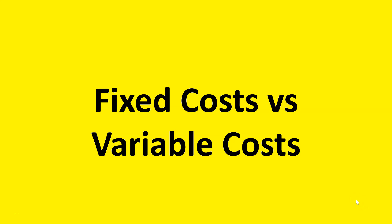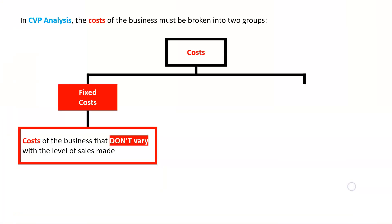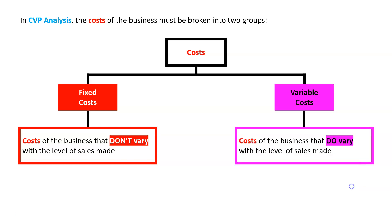In CVP analysis, we're going to have to distinguish between fixed costs and variable costs. The costs of the business can be broken into two groups. We have the fixed costs — the costs that don't vary with the level of sales made — and we've also got the variable costs, which are costs of the business that do vary with the level of sales made.